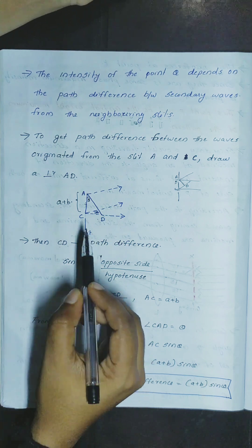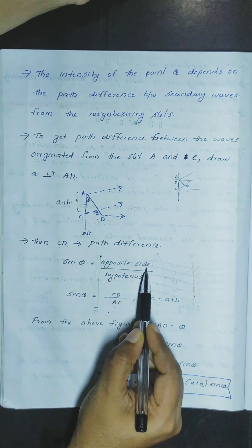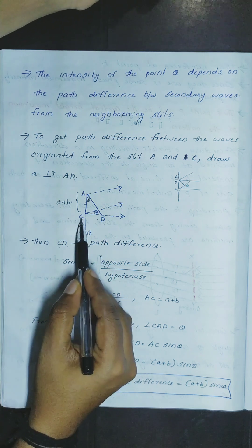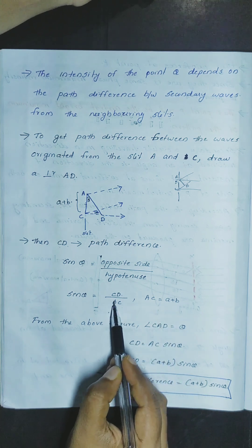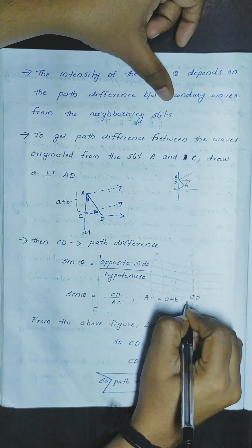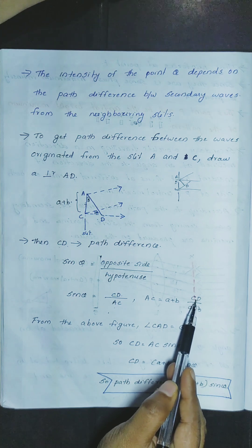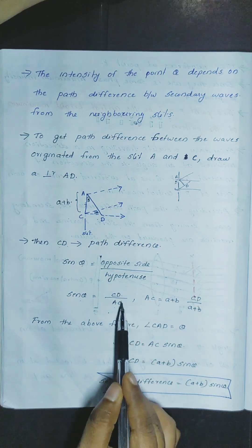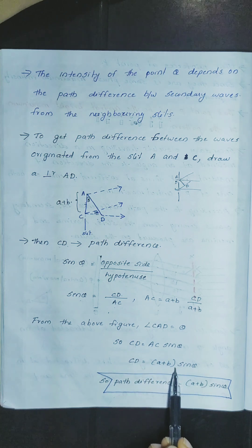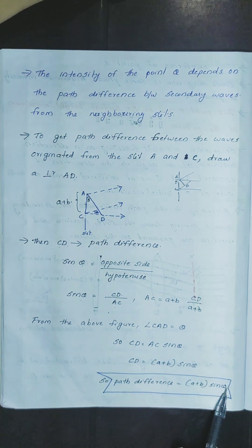Sin theta is equal to opposite side by hypotenuse. Sin theta is equal to CD divided by AC. Hypotenuse is AC. AC is equal to A plus B. Therefore CD is equal to A plus B into sin theta.